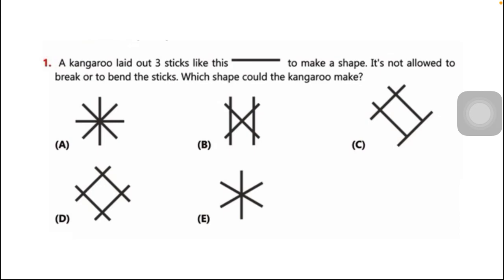The options are given here: A, B, C, D, and E. If you have this question, first of all you have to understand it. So the kangaroo has three sticks in his hand and he is not allowed to break or bend them. For three sticks we have to make a shape.